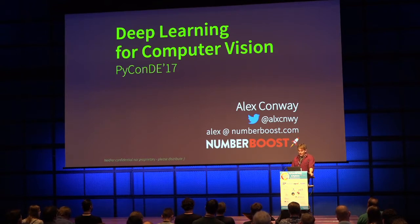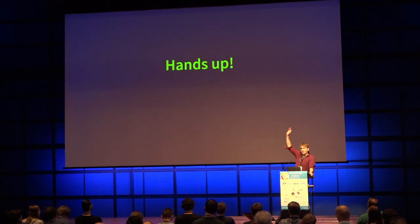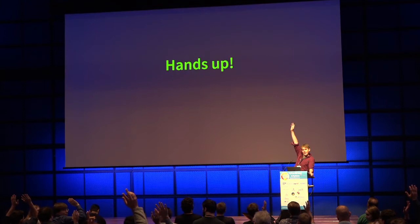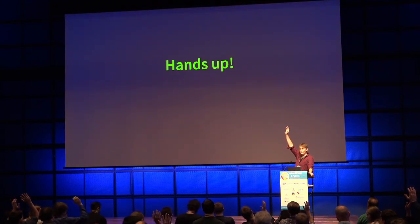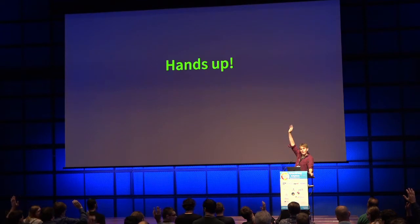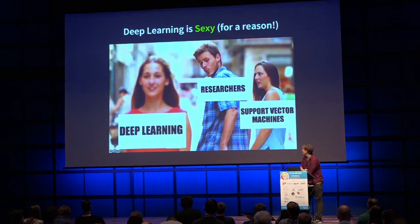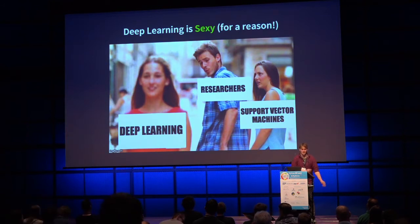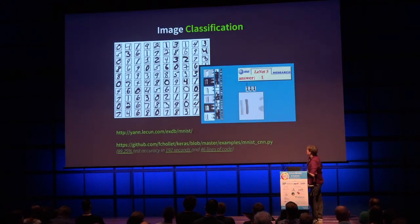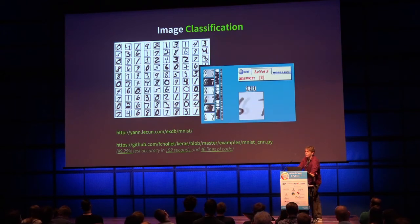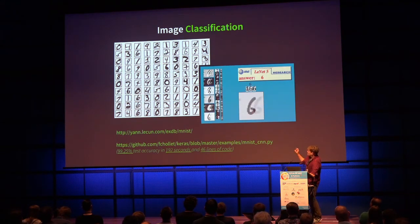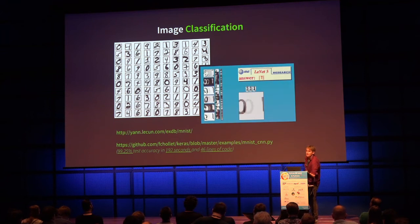Hands up if you've ever used a neural network before. Keep them up if you've ever used a neural network for computer vision. So, deep learning for computer vision — deep learning is very sexy these days. The sort of hello world example of a computer vision problem is this MNIST image classification problem, where you have images of handwritten digits — 28 by 28 pixel images — and we're trying to classify what digit it is: is it a zero, a one, or a five?